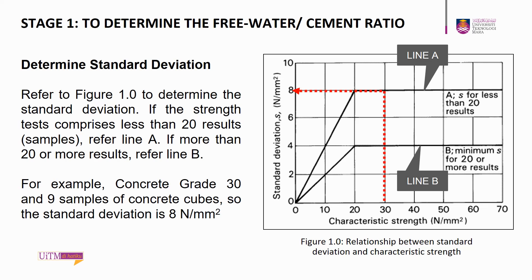Next, we need to determine the standard deviation. The standard deviation is a statistic that measures the dispersion of a data set relative to its mean and is calculated as the square root of the variance. A low standard deviation indicates that the values tend to be close to the mean, while a high standard deviation indicates that the values are spread out over a wider range. In concrete mix design, the standard deviation is calculated based on at least 20 results. If fewer results are available, a standard deviation of 8 N per millimeter square should be used for concrete with a characteristic strength of 20 N per millimeter square or above, referring to line A in Figure 1.0.